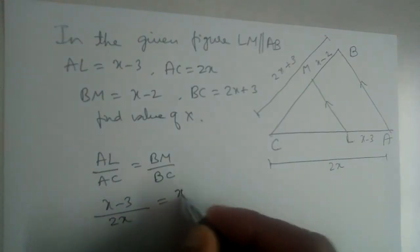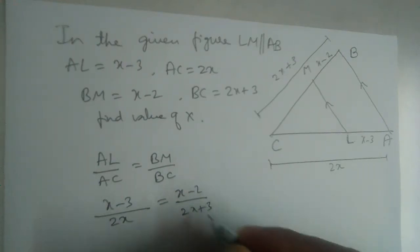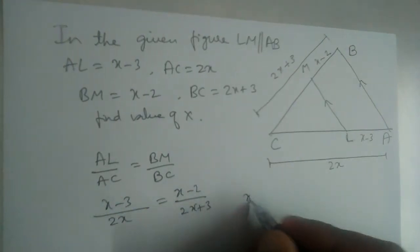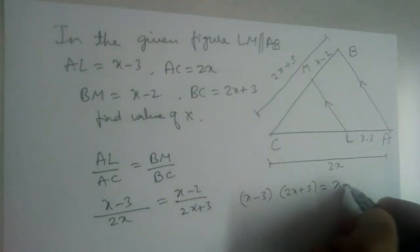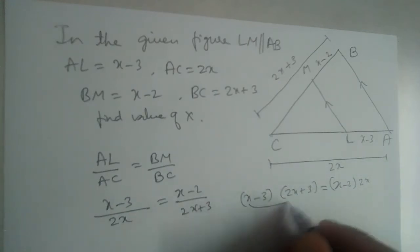Okay, if you cross multiply, x minus 3 times 2x plus 3 will be equal to x minus 2 into 2x. So x into 2x is 2x squared, x into 3 is 3x, minus 6x, minus 9 is equal to 2x squared minus 4x.